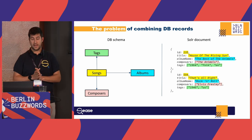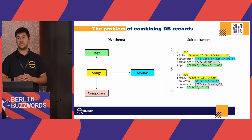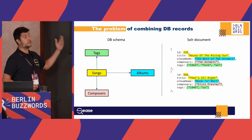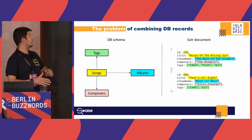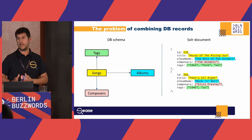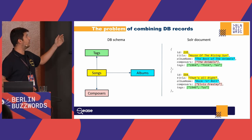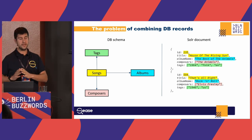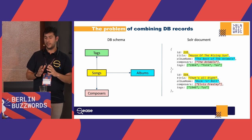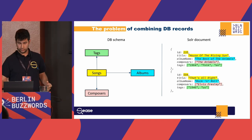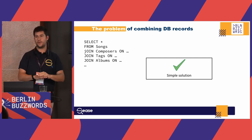We have data in our SQL database spread into multiple tables because we don't want repetitions — this is a normal way to store data. Let's suppose we want to index songs. In our database we may have one song table. Songs can have tags, but all information about tags is stored in another table. Same story with albums and composers. What we want at the end is Solr documents that aggregate all that information coming from different database records.